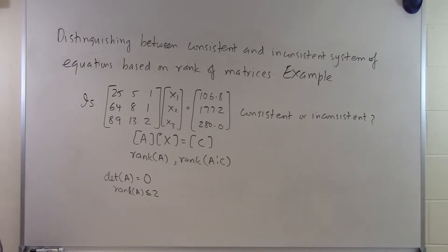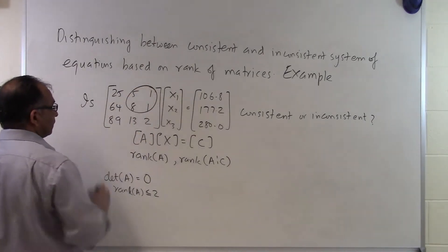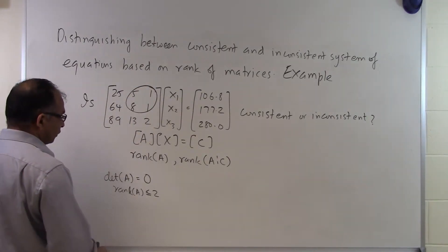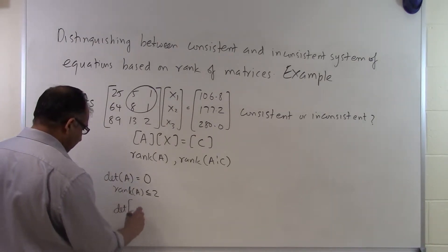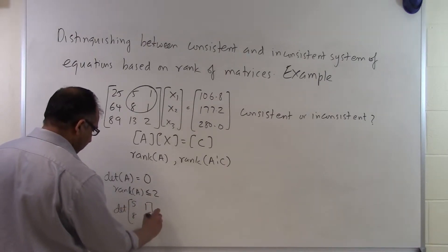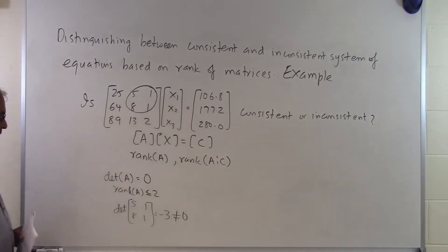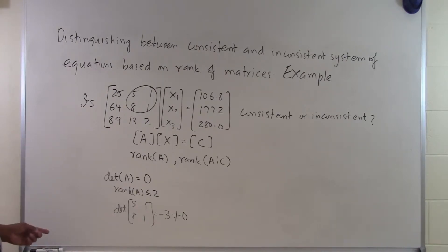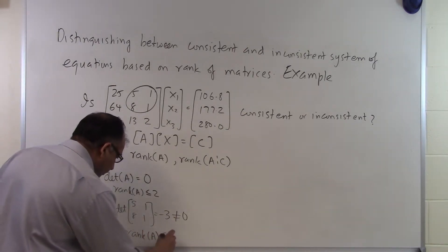Let's see whether the rank is 2, 1, or 0. If I take a 2x2 submatrix — the determinant of [5, 1; 8, 1] is turning out to be minus 3, which is not equal to 0. So there is a 2x2 submatrix whose determinant is not equal to 0, which tells me the rank of A is equal to 2.